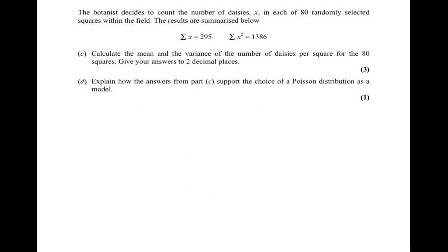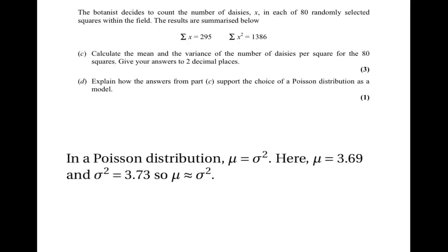The question asks us to explain why this supports the choice of a Poisson distribution as a model. In a Poisson distribution, both the mean and the variance are equal to lambda, so they should be the same. Here the mean is 3.69 and the variance is 3.73, which are very close together. Therefore it seems reasonable to use a Poisson distribution as a model.